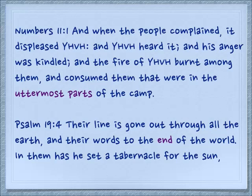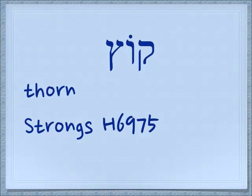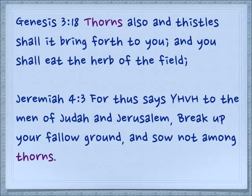So these words are all very similar, and we can see that they have the same letters. The word for thorn, also from this root, is 'kutz.' And why is that? Because the end of the thorn is the thing that's important about the thorn. Genesis 3:18 — thorns also and thistles shall it bring forth to you, and you shall eat the herb of the field. Jeremiah 4:3 — and thus says Yehovah to the men of Judah and Jerusalem, break up your fallow ground, and sow not among thorns. We know that seed sown among thorns does not produce.